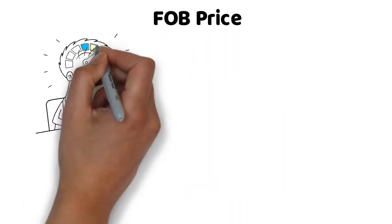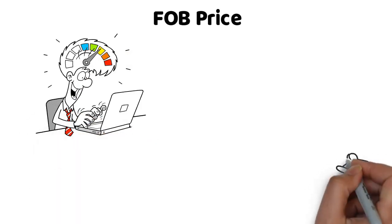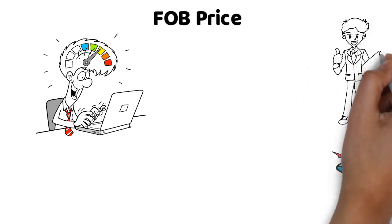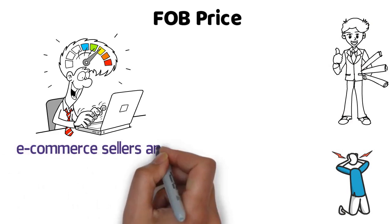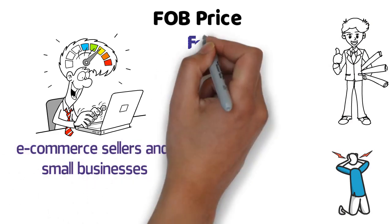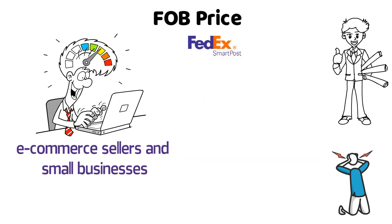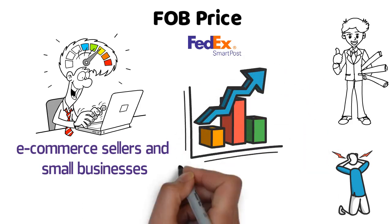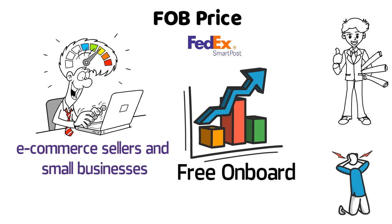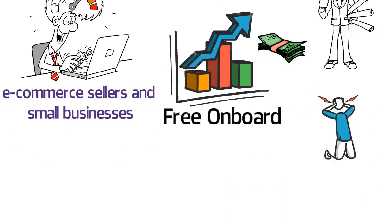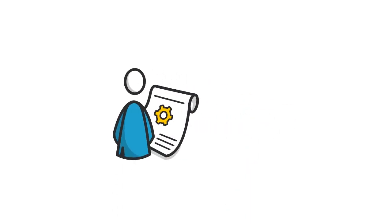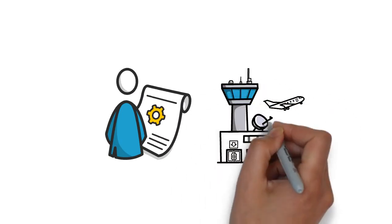Number 1: FOB Price. FOB is the most famous trade term, but a lot of tutorials on the internet are misleading you — you don't have to go for it all the time. The truth is, FOB is not the best choice for everyone. It's not best for new e-commerce sellers and small businesses. People using courier services like FedEx as the delivery solution should avoid it. For these importers, FOB would just lead to unnecessarily higher prices.